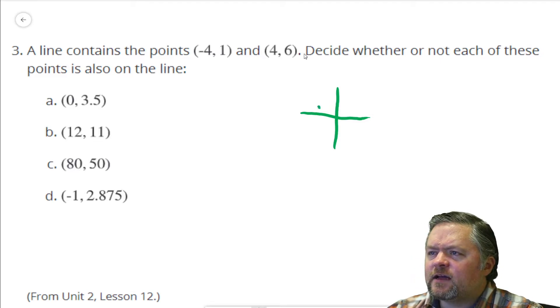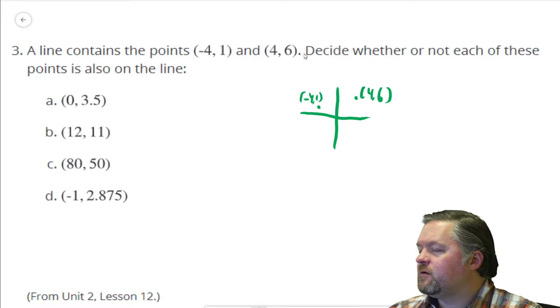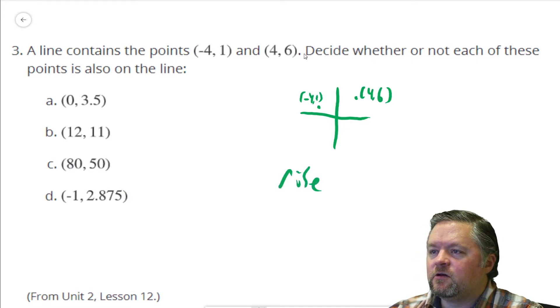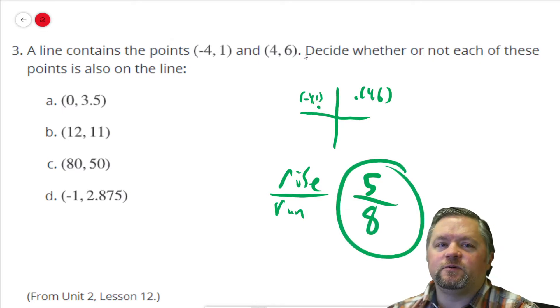This goes from (-4, 1) to (4, 6). So slope, we remember, is rise over run. From 1 to 6, our rise is 5. From negative 4 to positive 4, our run is 8. So our slope is 5/8.